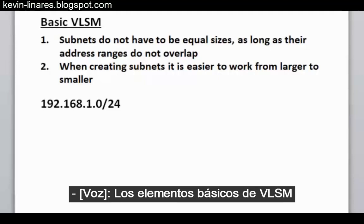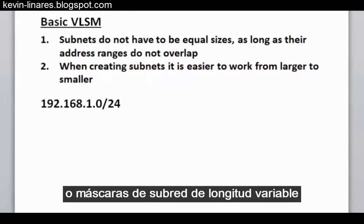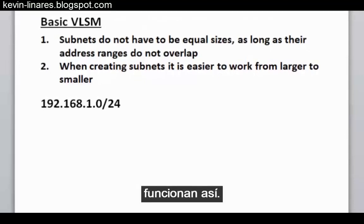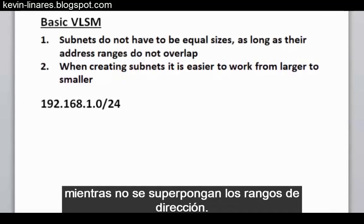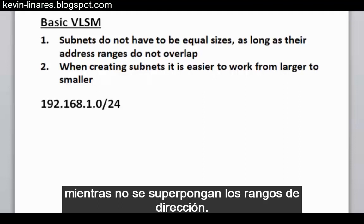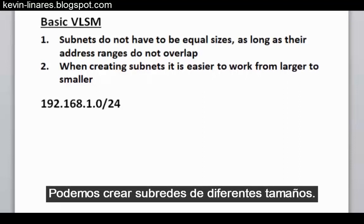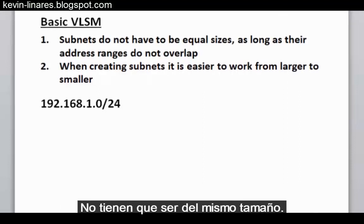The basics of VLSM, or Variable Length Subnet Masks, works like this. Rule 1: Subnets do not have to be equal sizes, as long as their address ranges do not overlap. So we can create unequal sized subnets — they do not all have to be the same size.